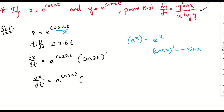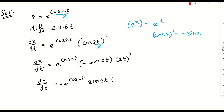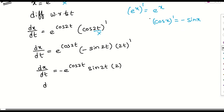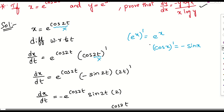The derivative of cos x is minus sin x. So applying the chain rule, we get minus sin 2t, and then the derivative of 2t is 2. So dx/dt = -2 · sin 2t · e^(cos 2t).